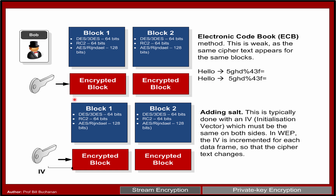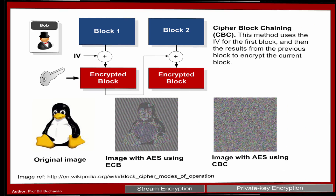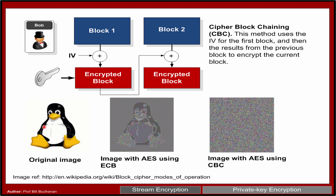An improved method is to add salt. With this we have what's called an initialization vector, and the initialization vector is taken with the key to produce a different cipher block. This shows the problem with standard electronic codebook — taking an image and using top quality AES encryption, you can still see the penguin, because similar areas that are encrypted will always come out the same. JPEG pixel blocks end up being the same data each time.